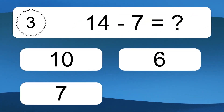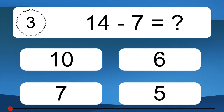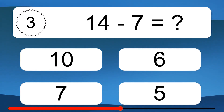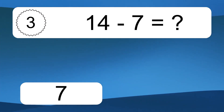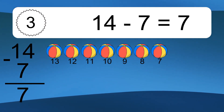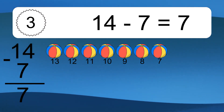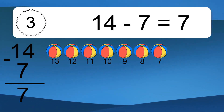14 minus 7 equals what? 14 minus 7 equals 7. Let's count it. 13, 12, 11, 10, 9, 8, 7.